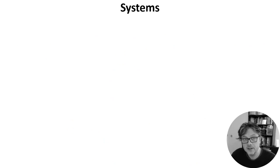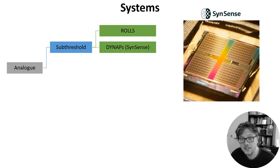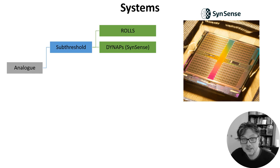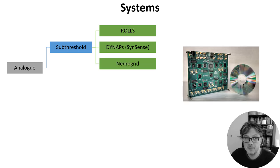I want to finish this video with a quick look at some of the products available today and how they use some of the components we've seen. We'll start with the analog sub-threshold systems that run in real time. The first is Rolls and Dynapse, now commercialized by SynSense. The basic Rolls chip has 256 adaptive exponential integrate-and-fire neurons per chip with 64k synapses with short-term plasticity and 64k using the SDSP learning rule. That goes up to tens of thousands of neurons in Dynapse with a spike routing architecture. There's also NeuroGrid, which has a million neurons but with synaptic weights stored off-chip, adding latency.